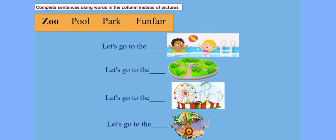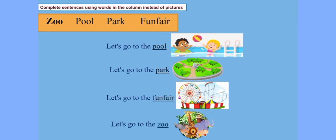Let's practice again. Complete sentences using words in the column instead of pictures. Бағандағы сөздерді қолданып, сөйлемді аяқта. Өзінде тексер. Good job! Жарайтын!